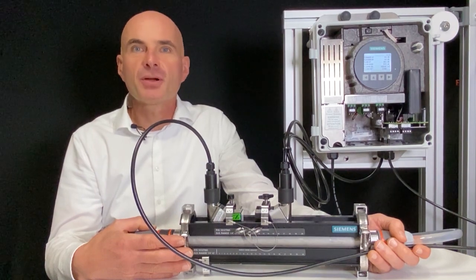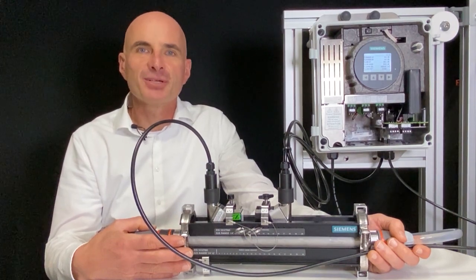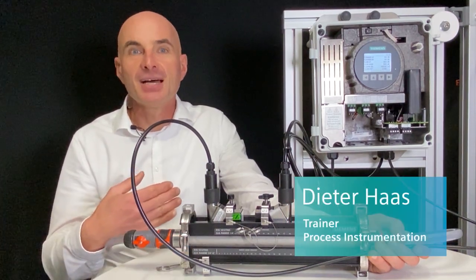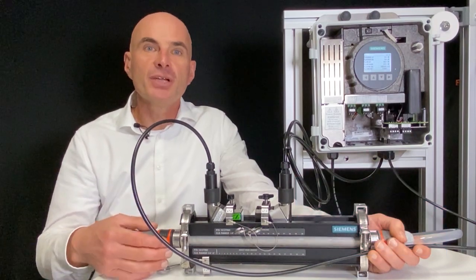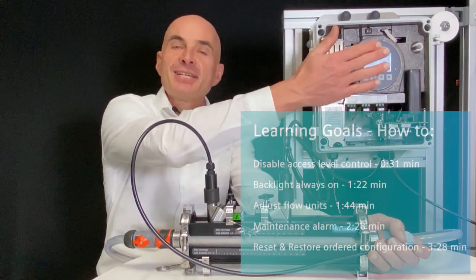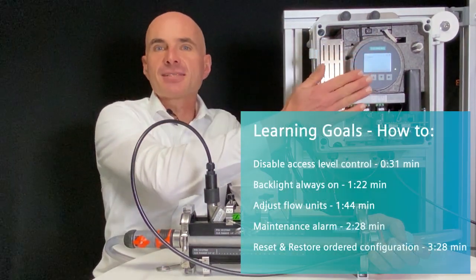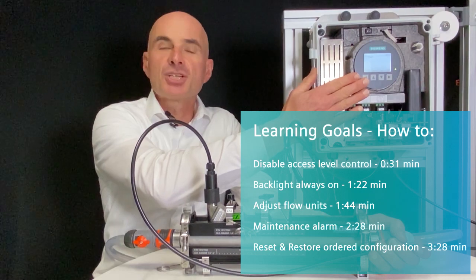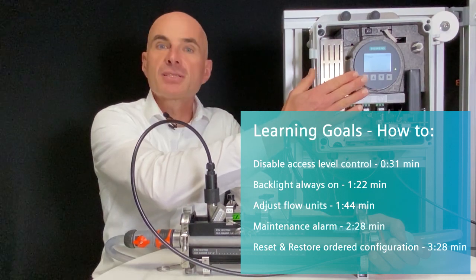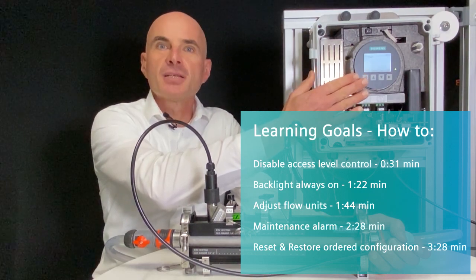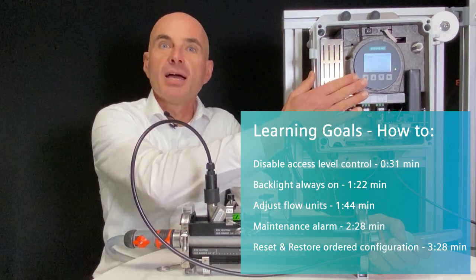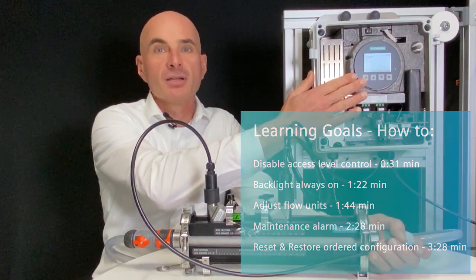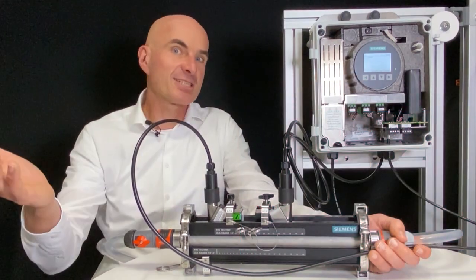Welcome to training for process instrumentation. My name is Dieter Haas. After this tutorial you will know how to disable access level control, turn the backlight always on, adjust the flow units on the display, solve a maintenance alarm, and restore order configuration. Let's start.